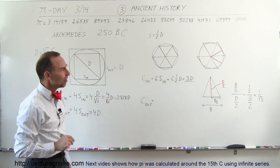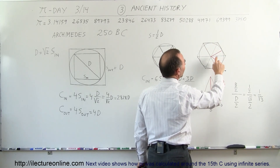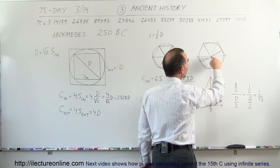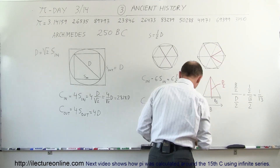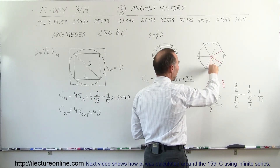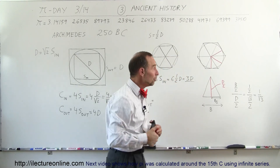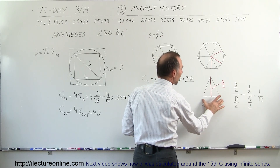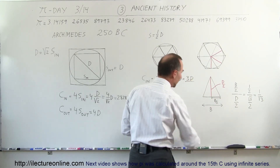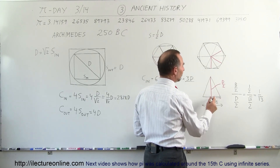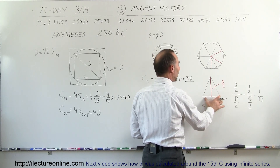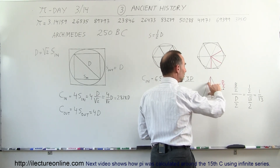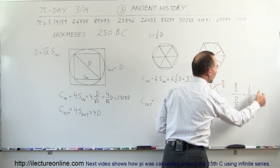The outside hexagon is a bit more complicated. Drawing a hexagon on the outside again gives six equilateral triangles. Drawing a line from the center of the circle to the base of each triangle, we can see that this distance equals the diameter divided by two, and that line bisects the base of the triangle. In a 30-60-90 triangle where the short side is half the hypotenuse, the ratio of the half-base to the radius is one-half divided by the square root of three over two, which equals one divided by the square root of three.